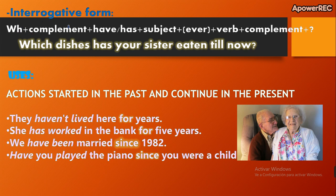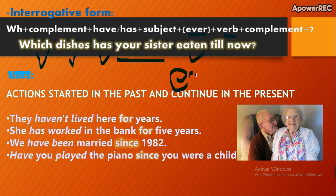Now we see the interrogative form. For the interrogative form, we use this structure: the WH complement (optional), have or has, the subject, ever (optional), the verb in participle, and then the complement. Example: Which dishes has your sister ever eaten till now? — ¿Cuántos platos ha comido tu hermana hasta ahora?